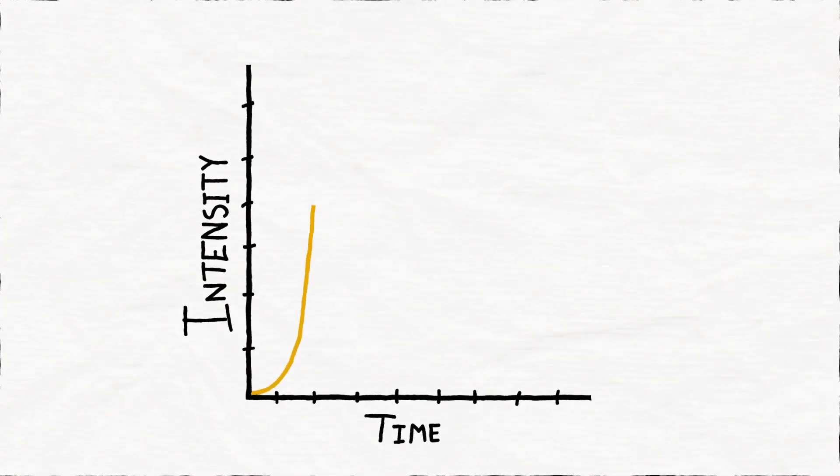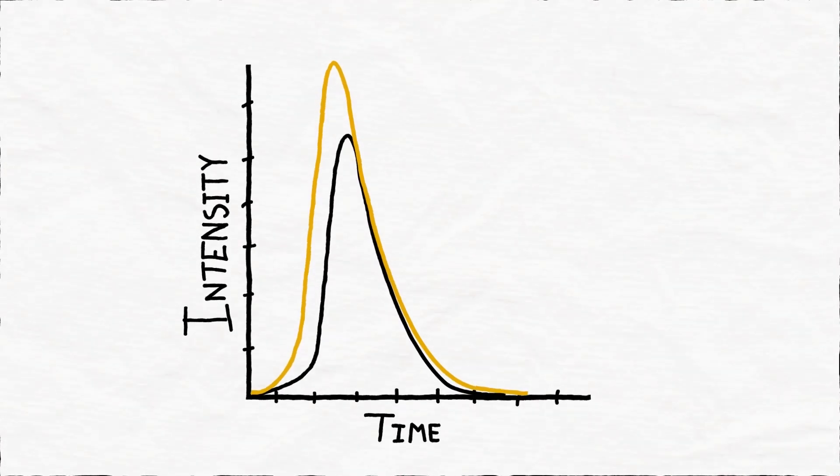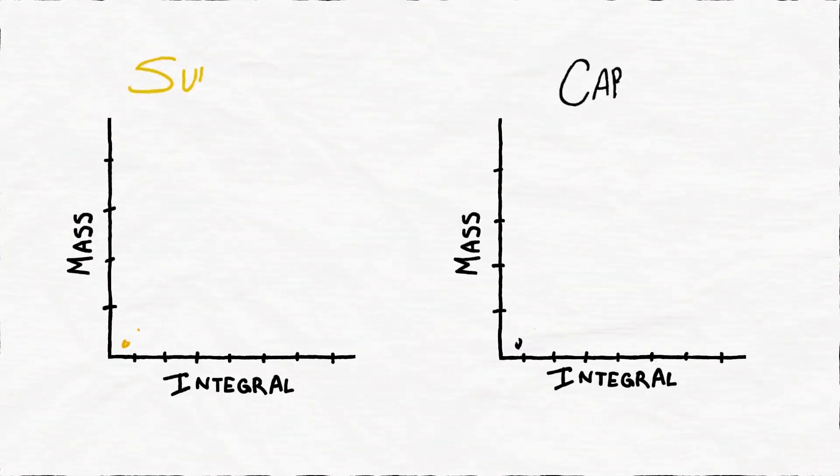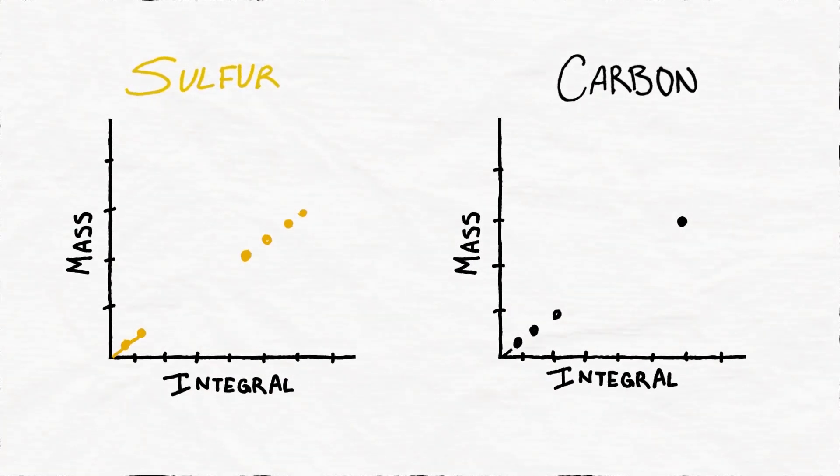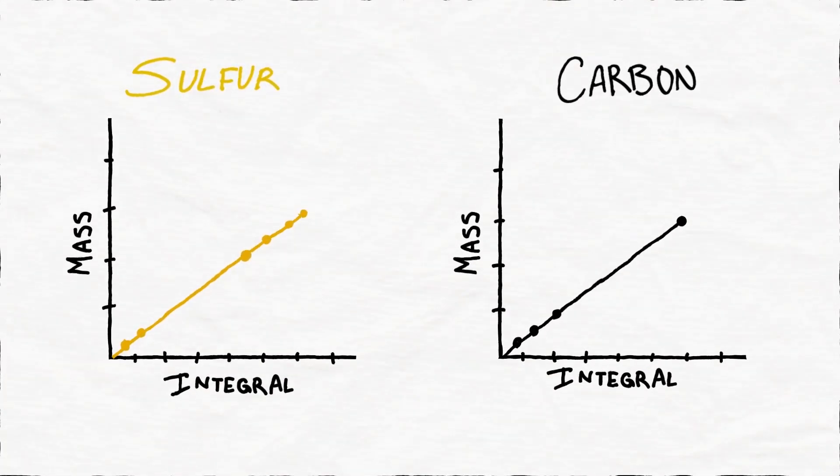Signals of CO2 and SO2 are recorded over time and integrated. Peak areas are directly related to the mass of CO2 and SO2 and is calibrated to the mass of carbon and sulfur in the sample.